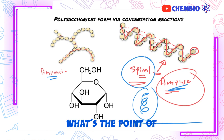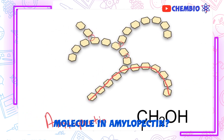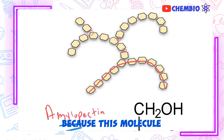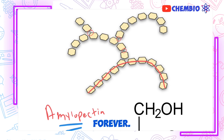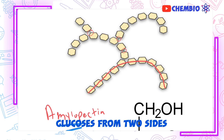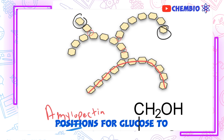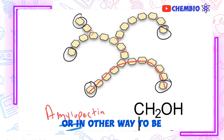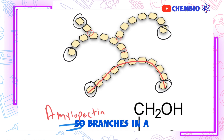What about amylopectin? What's the point of having a branched molecule? The point is because this molecule has to be digested at some point — the energy is not going to be stored forever. At some point the energy has to be taken out from amylopectin. Being branched is great for the cell because instead of being only able to take glucoses from two sides, you end up having many positions for glucose to be taken away and used to release energy. Branches in amylopectin provide accessibility for enzymes.